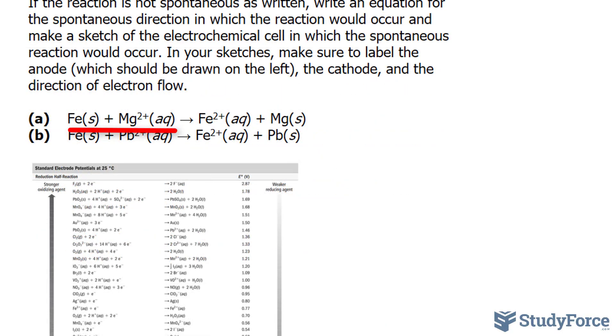We start with question A, where we have solid iron plus magnesium 2+ and this forms iron cations plus magnesium solid. From the way that this equation is written right now, we go from iron, which has an oxidation state of zero, solid iron, to 2+. That is oxidation, because as you can see, iron is losing electrons, becoming more positive. So that's oxidation currently.